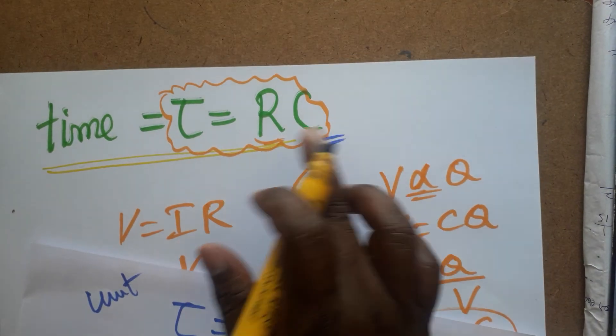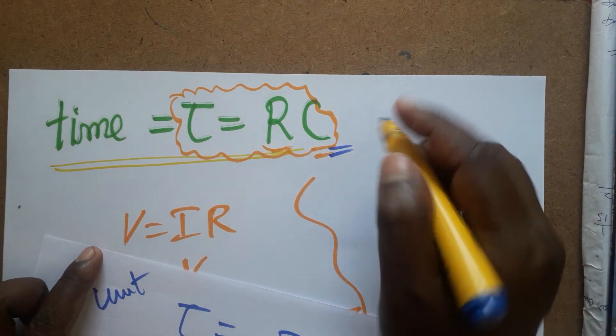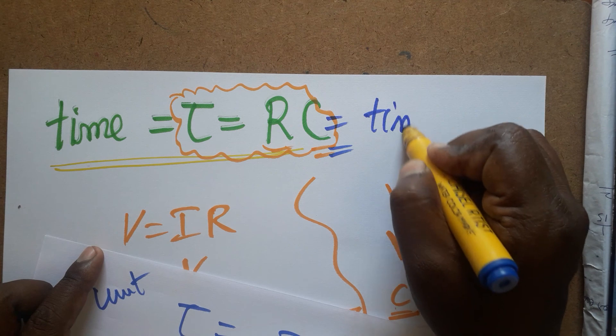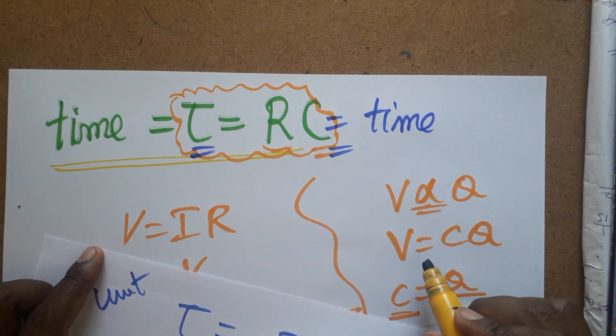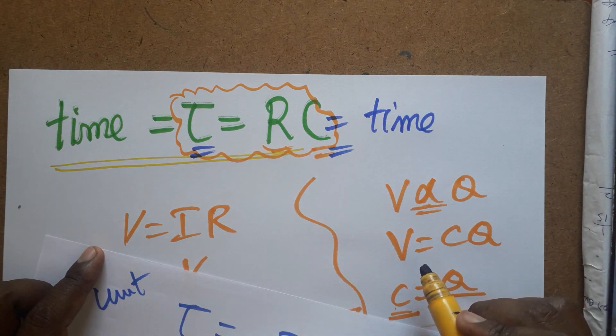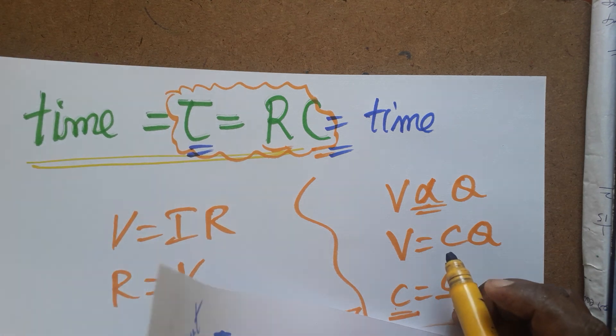So the product R times C gives us time — τ also represents the time constant. Thank you for watching my video; if you like my channel, please subscribe.